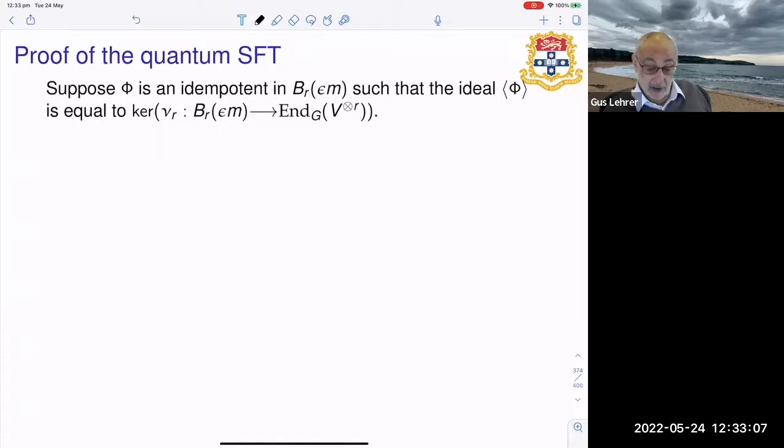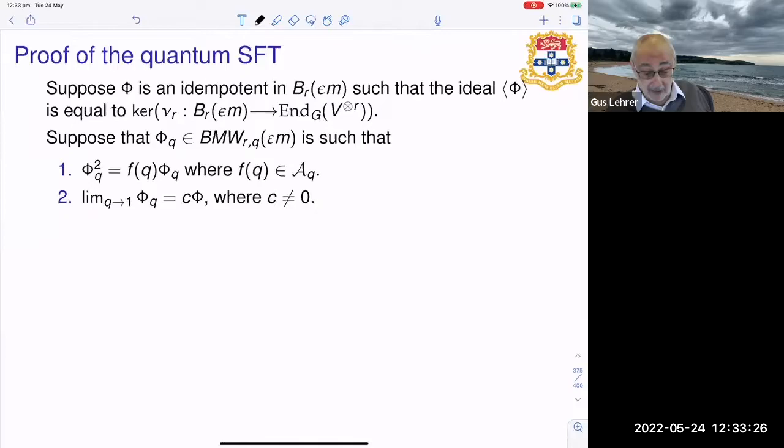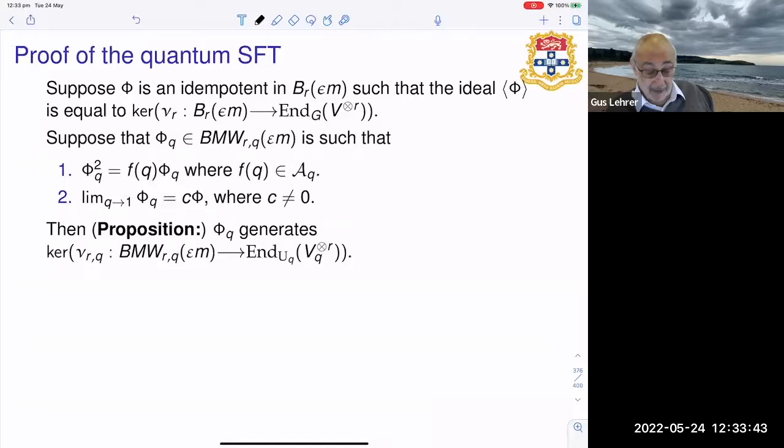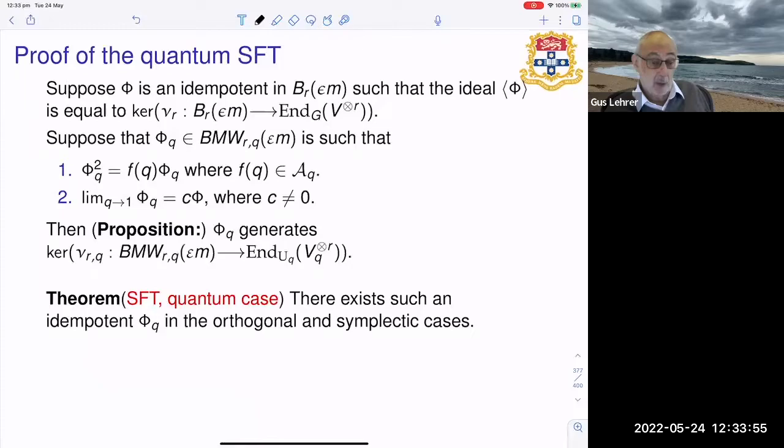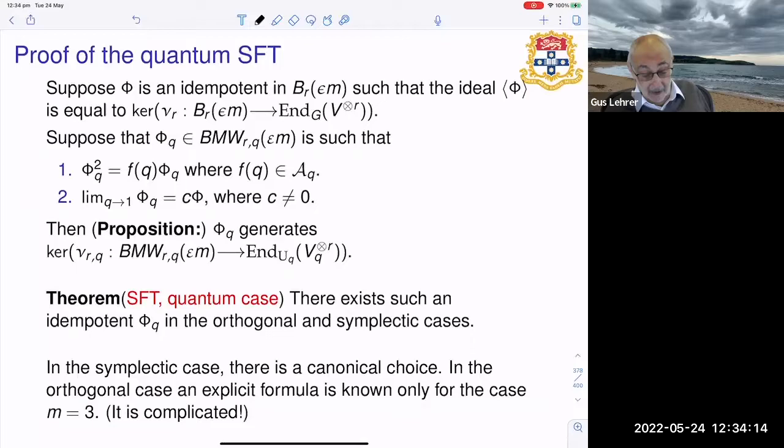Now suppose that we have an idempotent phi in the Brauer algebra such that the ideal phi B_r is equal to the kernel of the map from the Brauer algebra into endomorphisms of tensor space. And we suppose that we have a corresponding idempotent or quasi-idempotent phi_q in the BMW algebra which satisfies these conditions. Then it's actually a theorem that phi_q generates the kernel in the quantum case. And so we can deduce from what we proved in the classical cases that there exists such an idempotent in the orthogonal and symplectic cases in the quantum world.